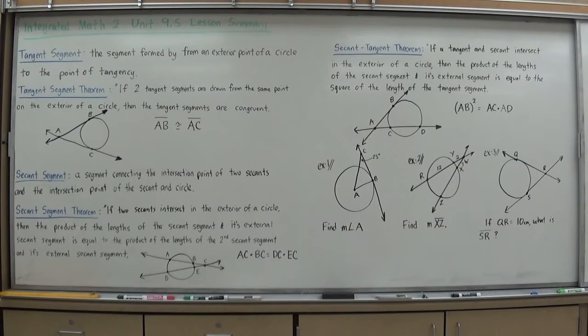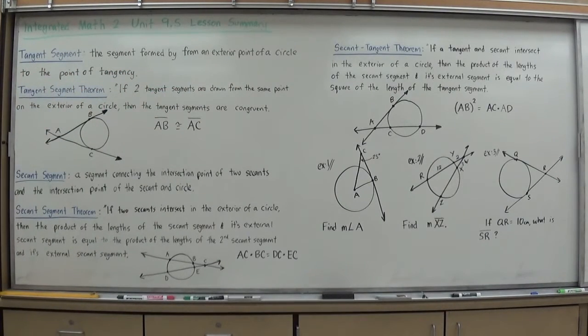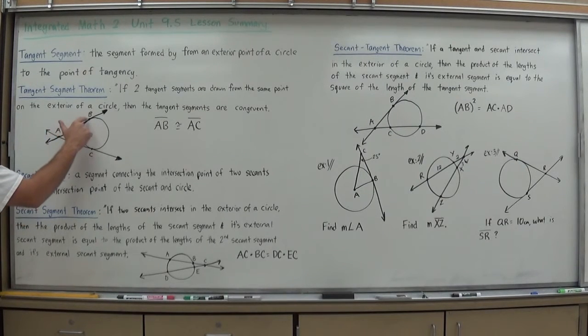A tangent segment is the segment formed from an exterior point of a circle to the point of tangency. If you take a look at my diagram here, I have a tangent line formed by AB, B being a point of tangency, and I have a tangent line AC with a point of tangency C. My tangent segment would be AB, which is a segment going from an intersection point outside to my point of tangency, or AC.